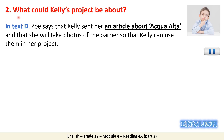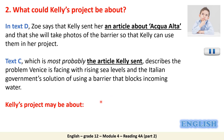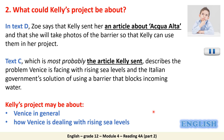From text D, we know that Kelly has sent Zoe an article about Aqualta, and Zoe promised to take some photos of the barrier after her canal trip. From text C, which is the article — and maybe this is the article Kelly sent Zoe — the article describes the problem Venice is facing with rising sea levels. Relating both texts, we can learn that Kelly's project is perhaps about Venice or how Venice is dealing with rising sea levels.